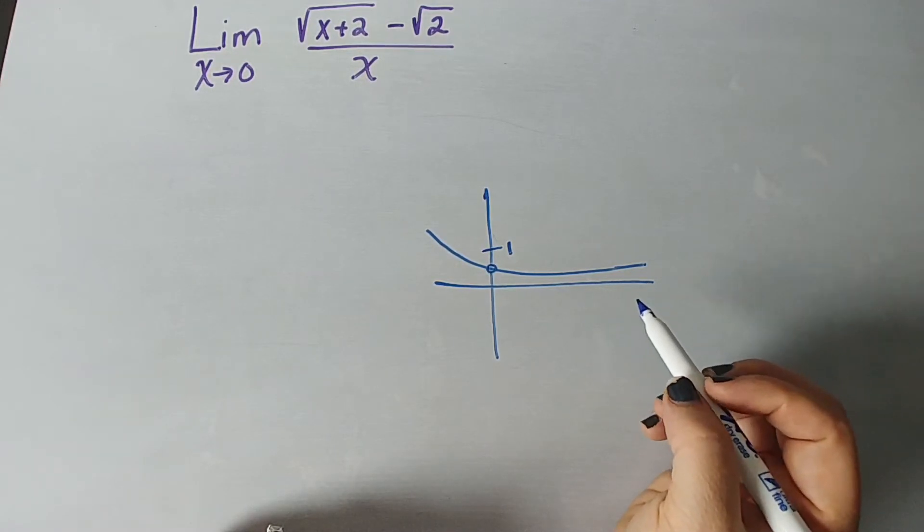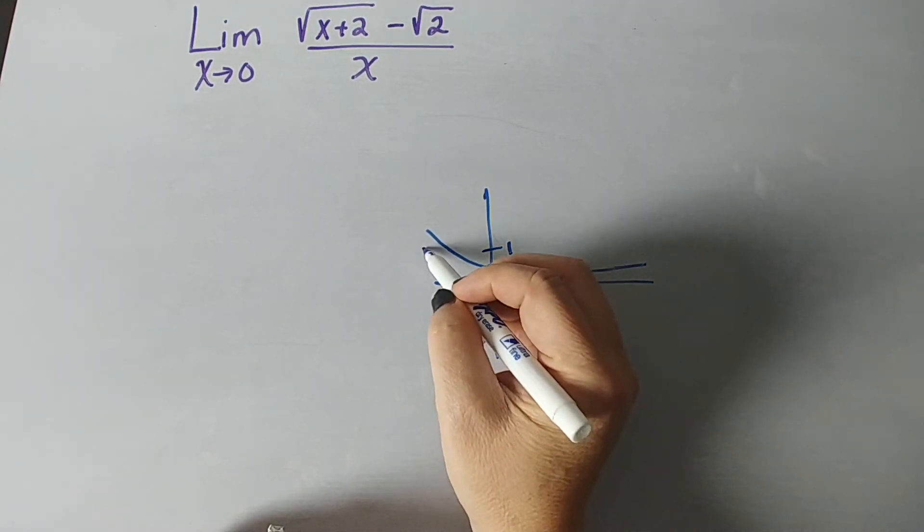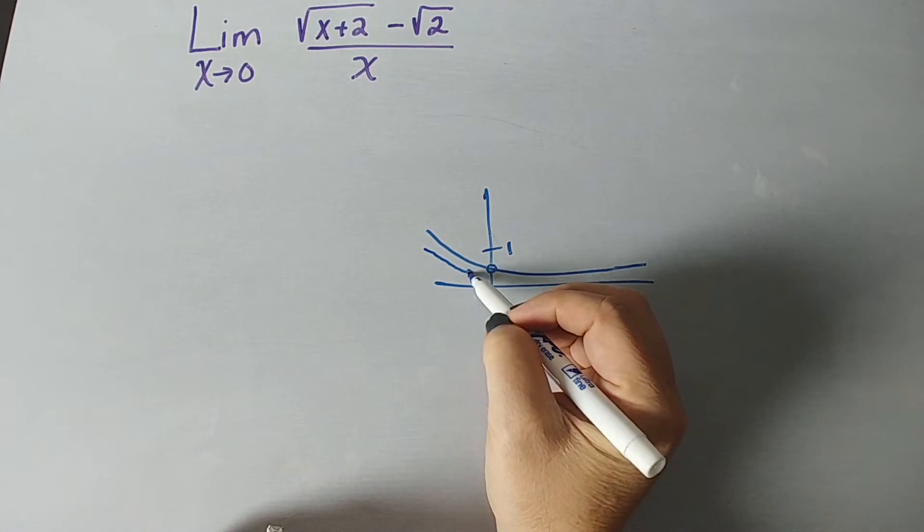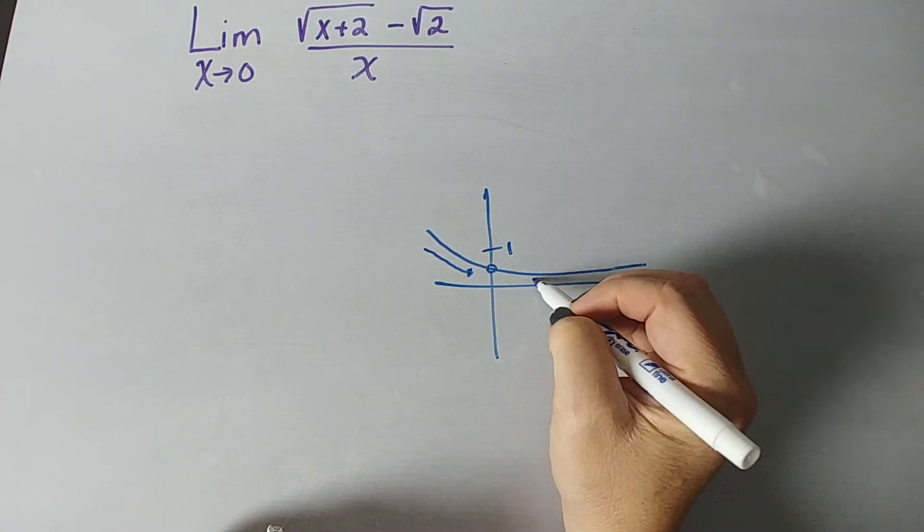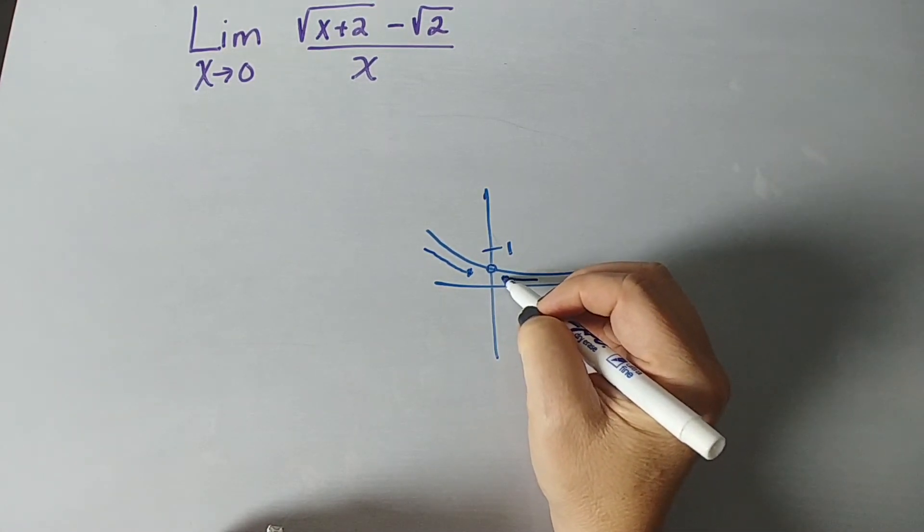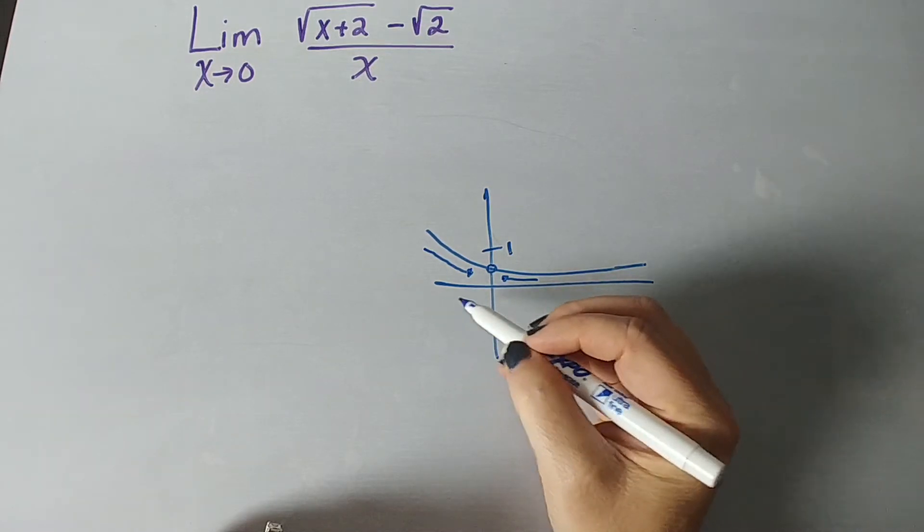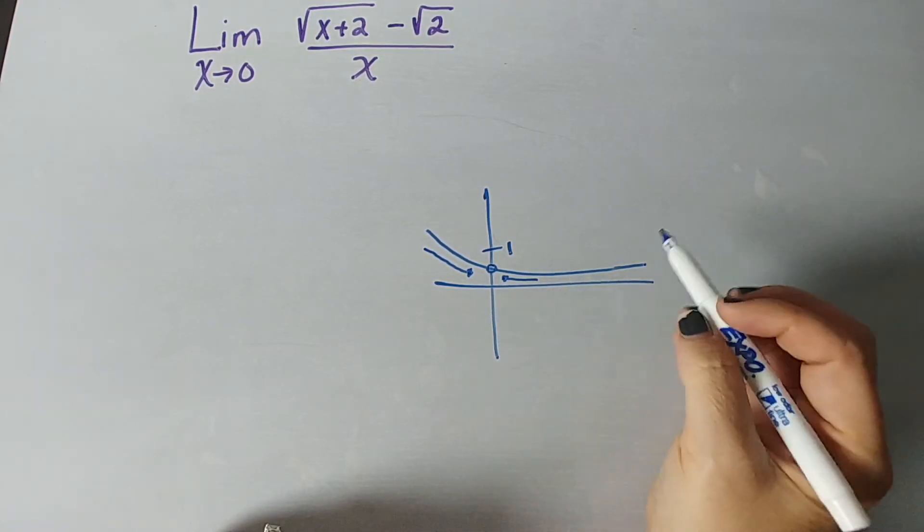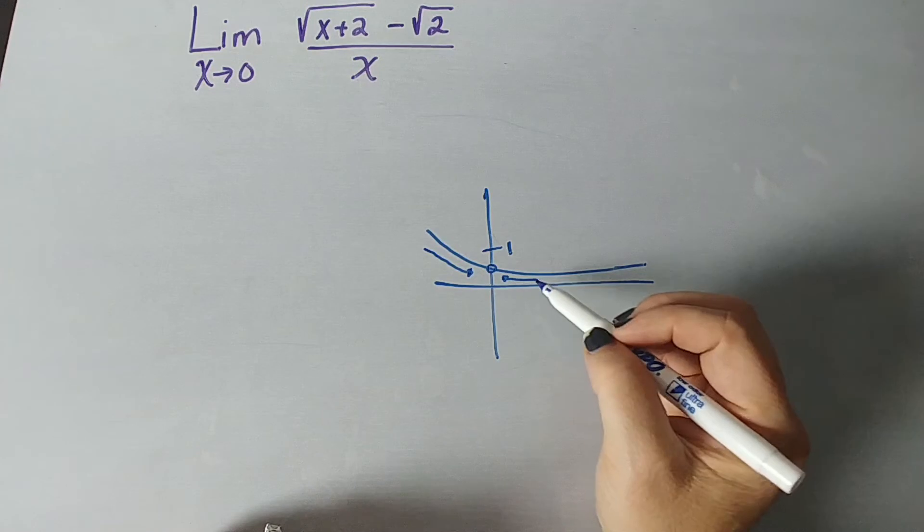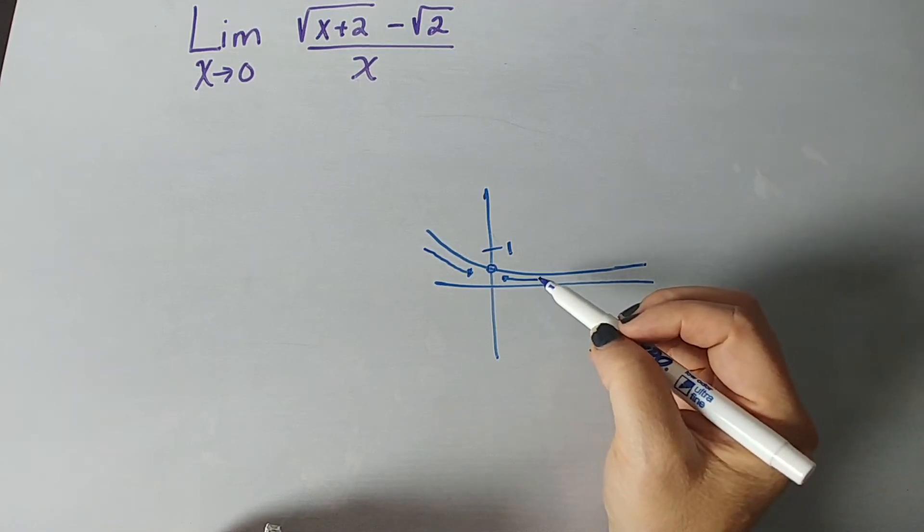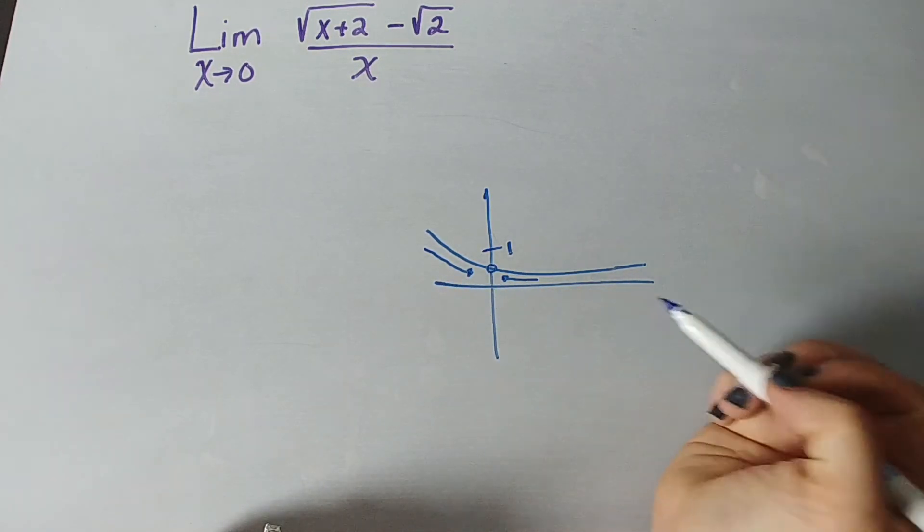A limit is the intended height of a function, but it needs to be the intended height coming from the left direction and from the right direction. So, you might hear the term left-hand limit, right-hand limit. It's the intended height of a function, and that can only exist if coming from both directions, that height is the same.